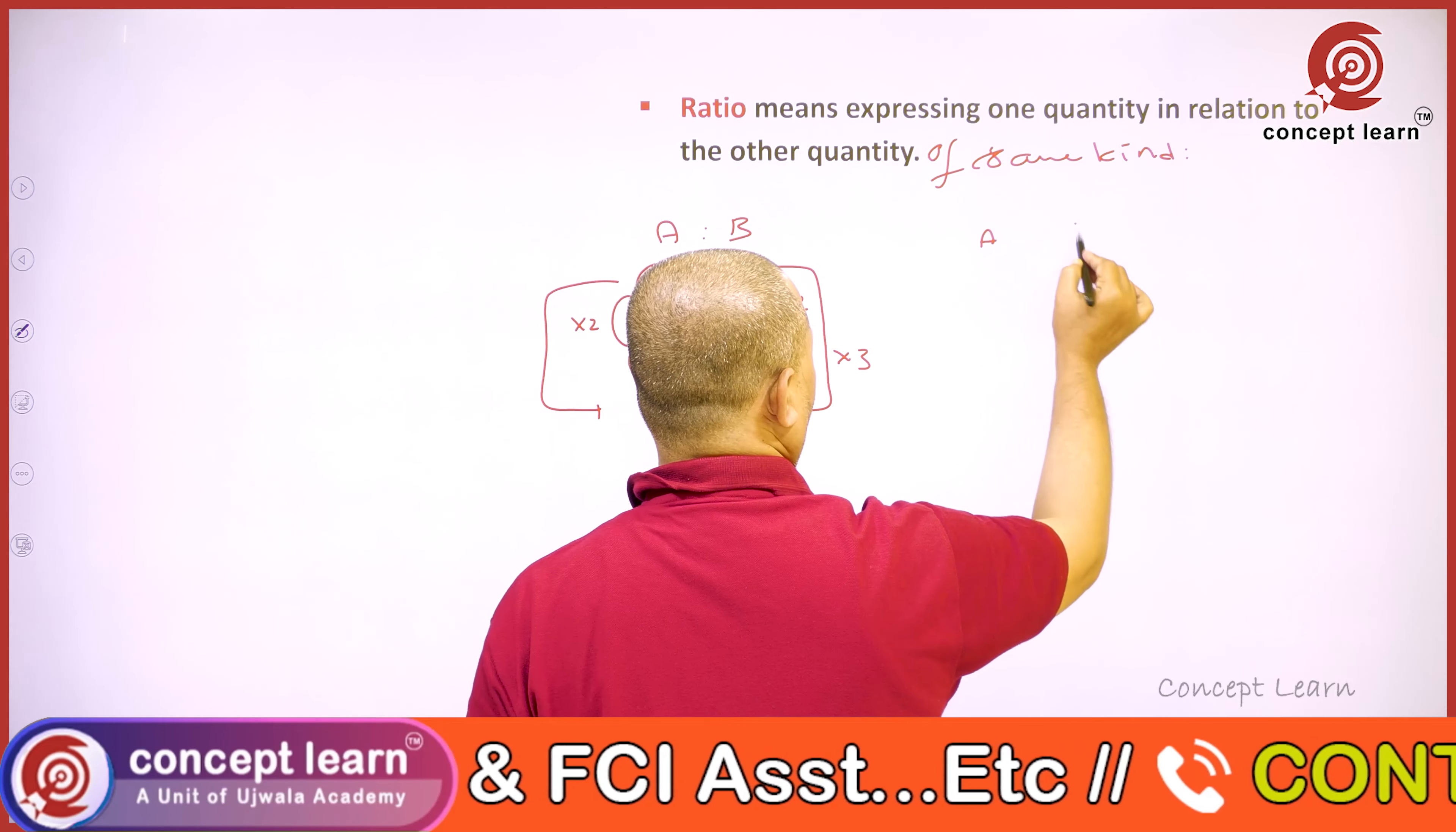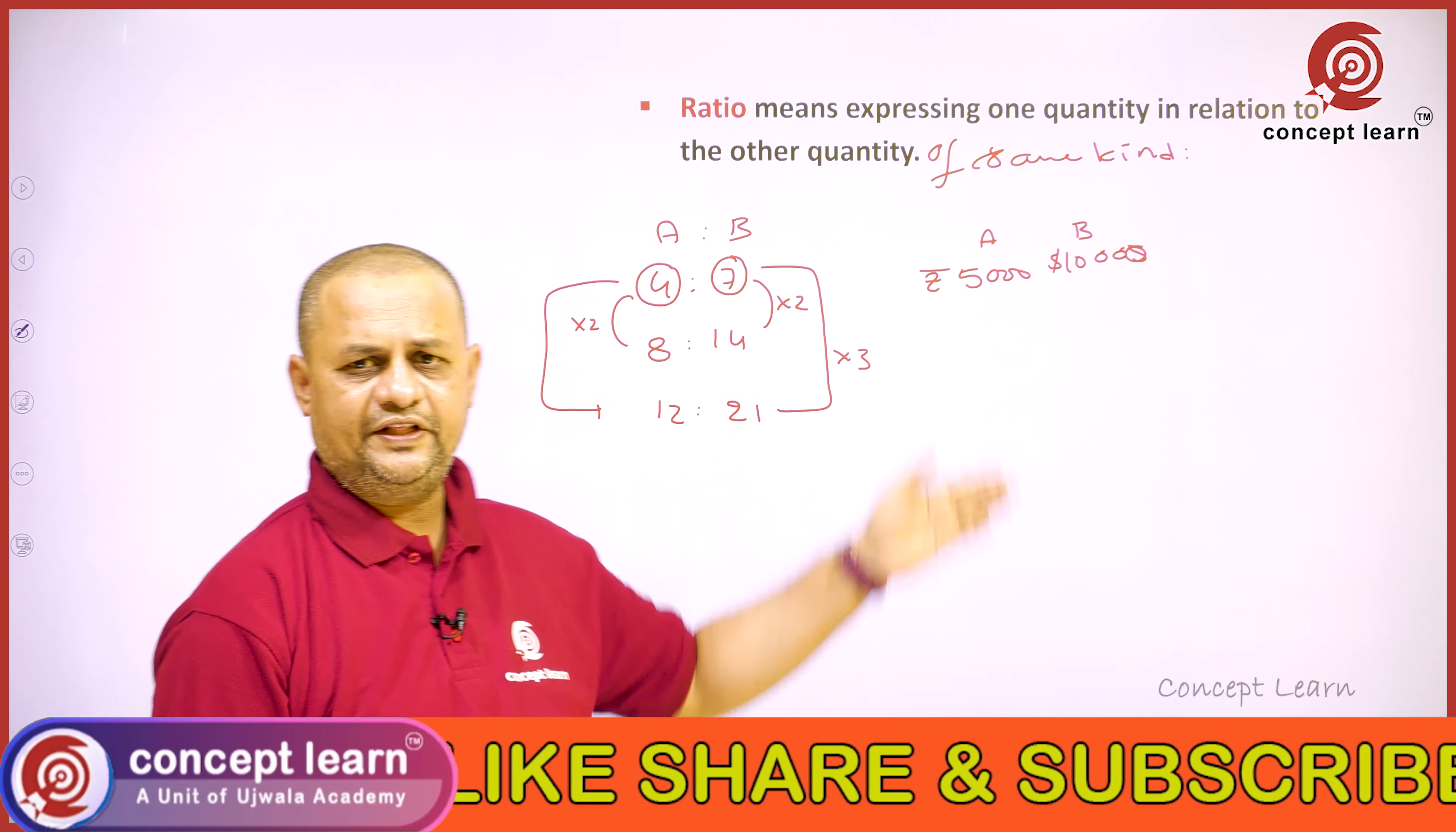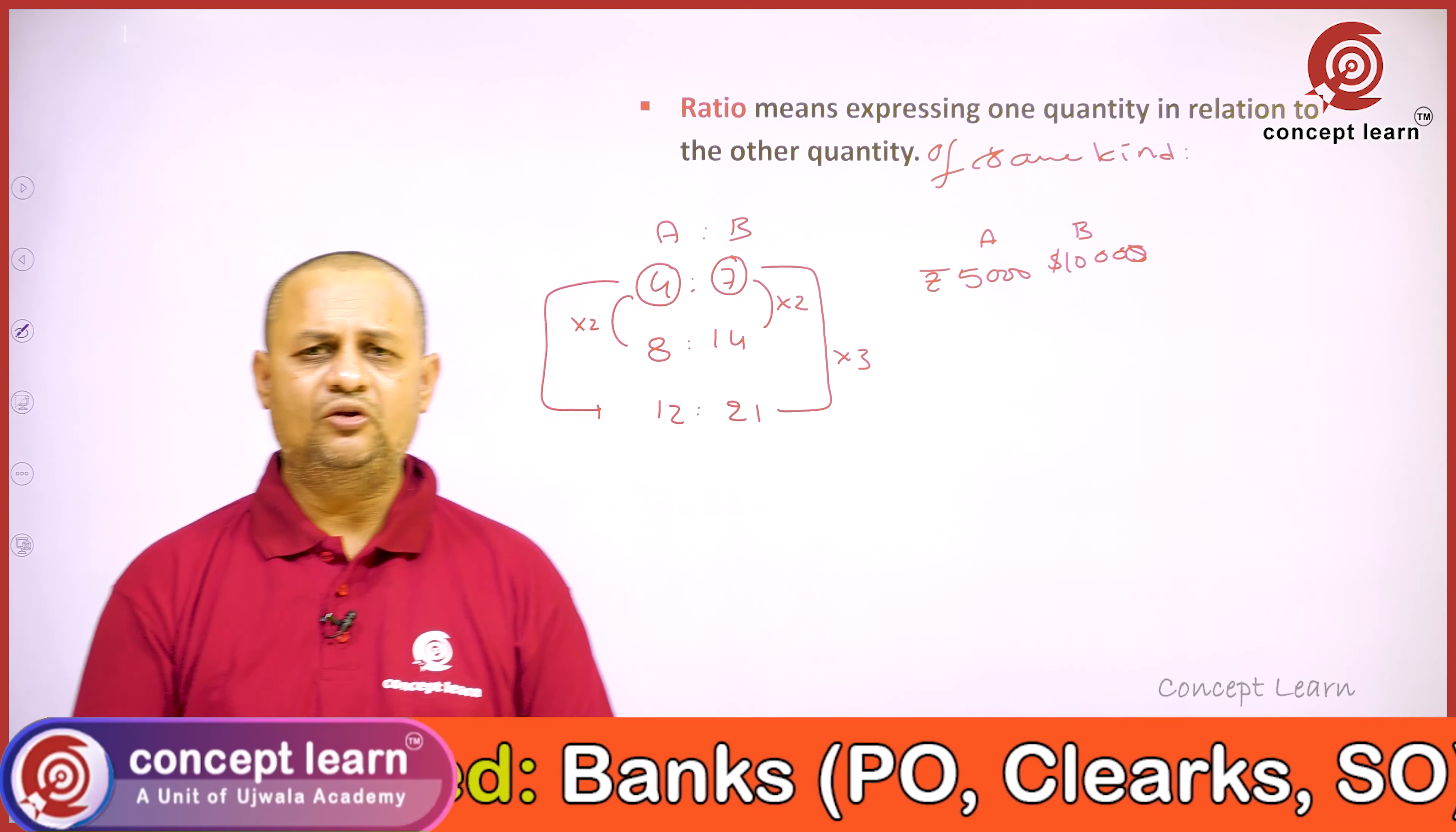For example, if two persons A and B have salaries of 5,000 rupees and 10,000 dollars respectively, can we say the ratio between them is 1 is to 2? No, because A's salary is in rupees and B's salary is in dollars.